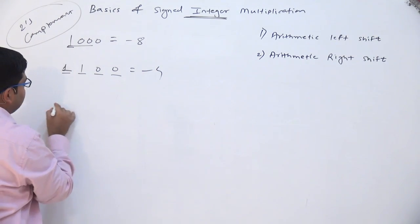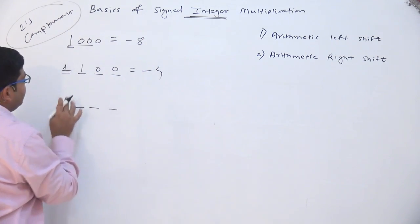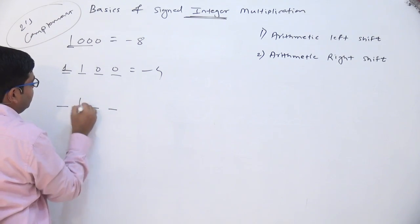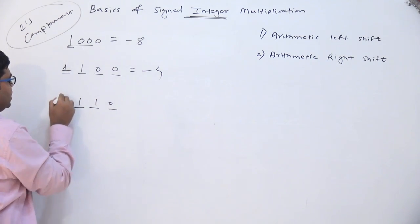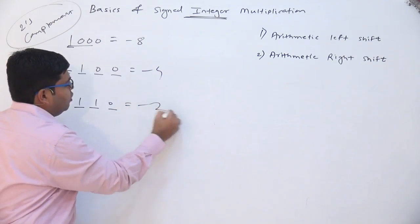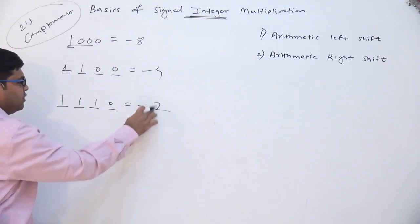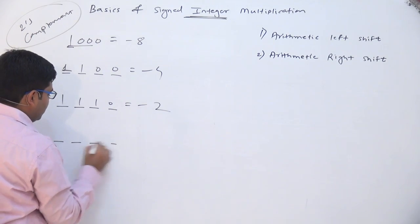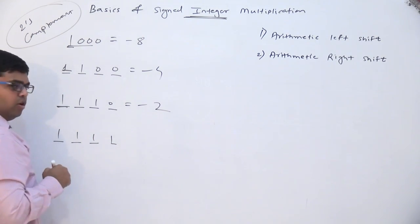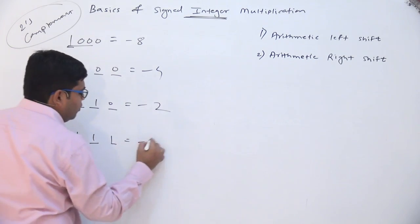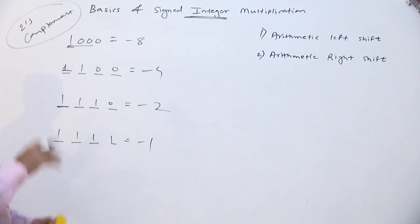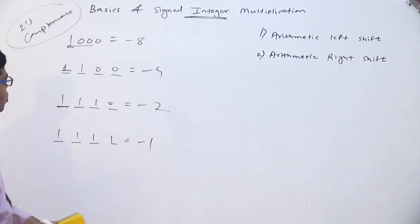Again do right shifting by 1. It will become 1 1 1 0 and you copy the original sign bit, giving a value equal to minus 2. Again do right shifting by 1 bit — it will be 1 1 1 1, copy the original sign bit, and it will be equal to minus 1. Likewise you can continue shifting and the number will get divided by 2 each time.